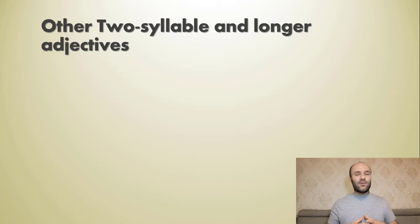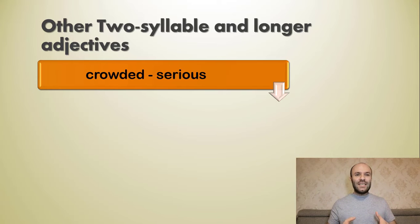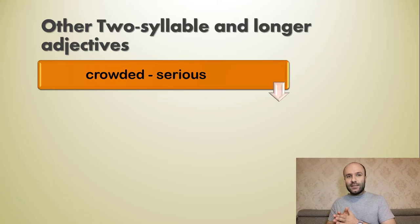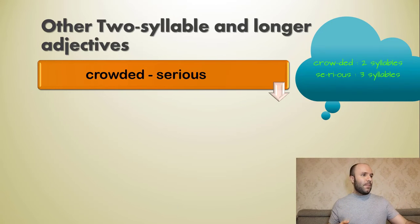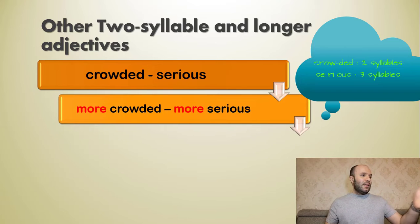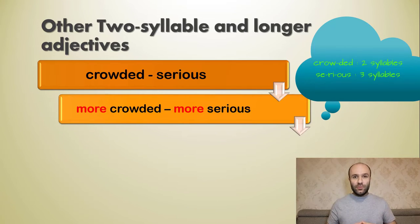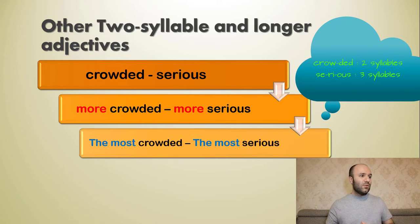For other two-syllable and longer adjectives, like 'crowded' and 'serious' — 'crowded' has two syllables, 'serious' has three syllables — when there's more than one syllable, the comparative comes like this: 'more crowded', 'more serious'. And the superlative comes like this: 'the most crowded', 'the most serious'.